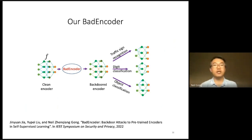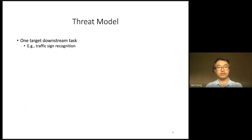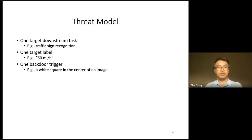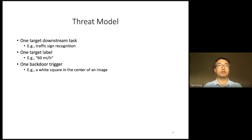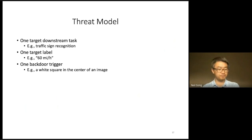For simplicity, let's denote the clean encoder as F and the backdoor encoder as F'. In our attack, we consider the following threat model. Suppose an attacker aims to attack one target downstream task, for instance, traffic sign recognition. The attacker picks one target label, for instance speed limit, and one backdoor trigger, for instance a white square in the center of an image. Our attack can also attack multiple target downstream tasks and multiple target labels simultaneously, but for simplicity, let's focus on just one target downstream task and one target label in this talk.